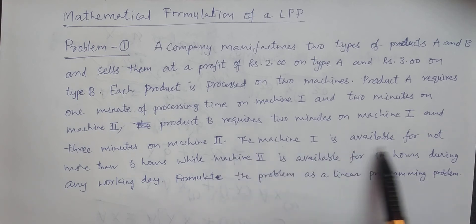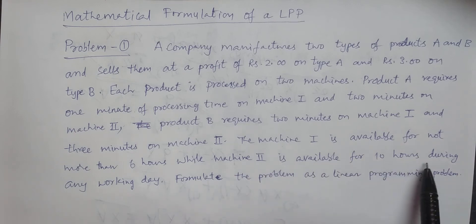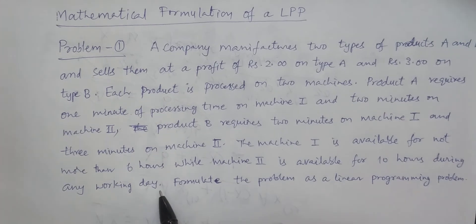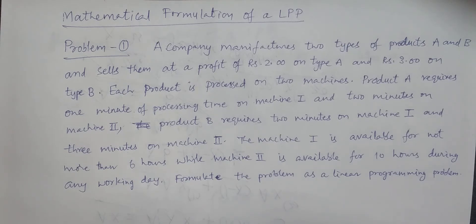Machine 1 is available for not more than 6 hours, while machine 2 is available for 10 hours during any working day. We have to formulate this as a linear programming problem.